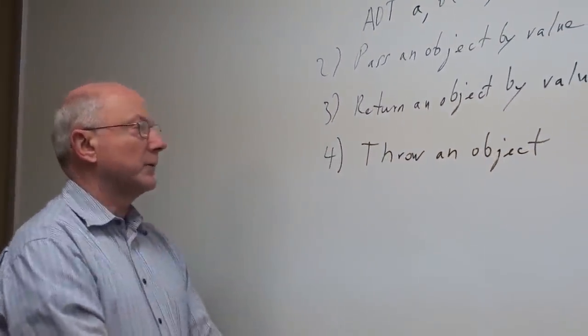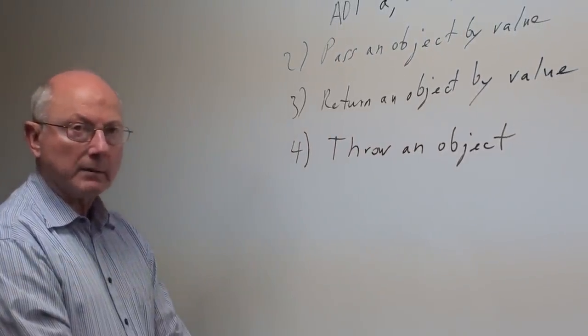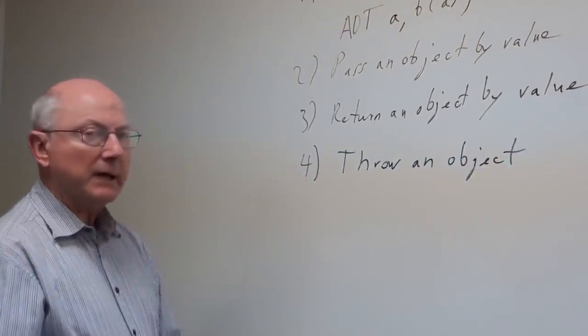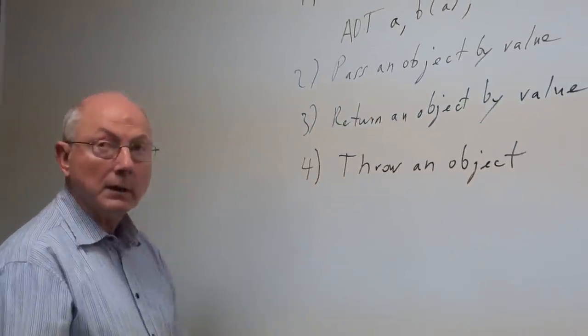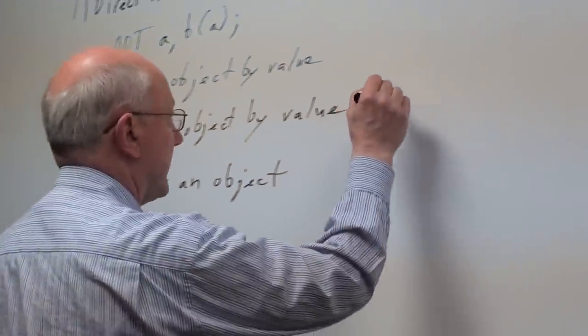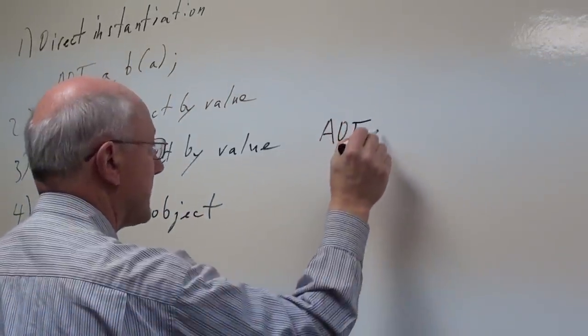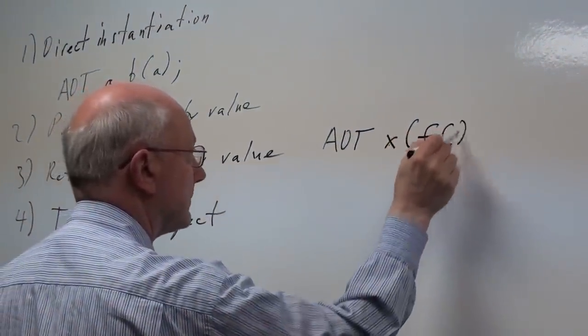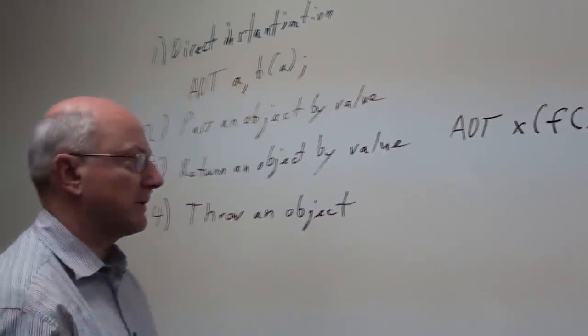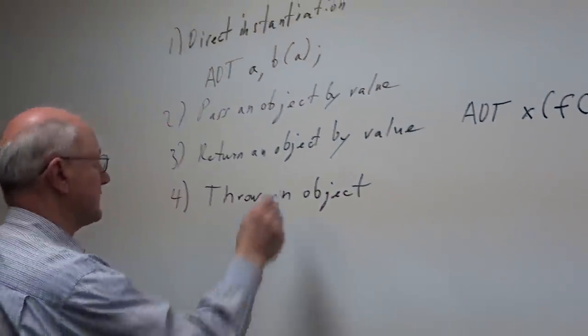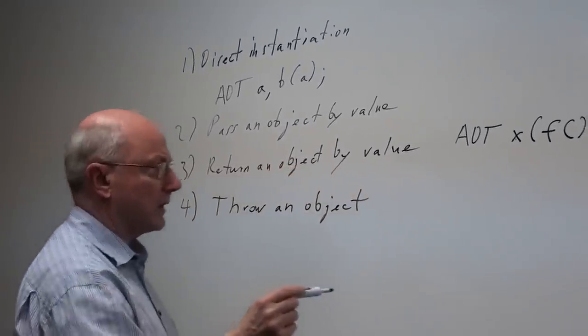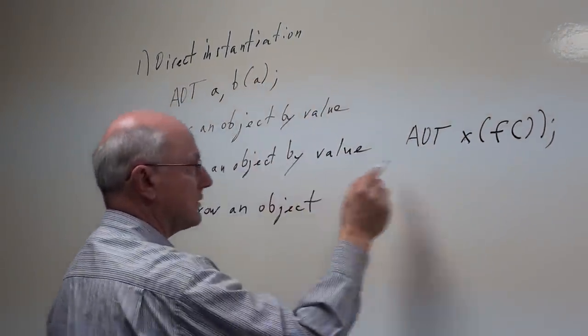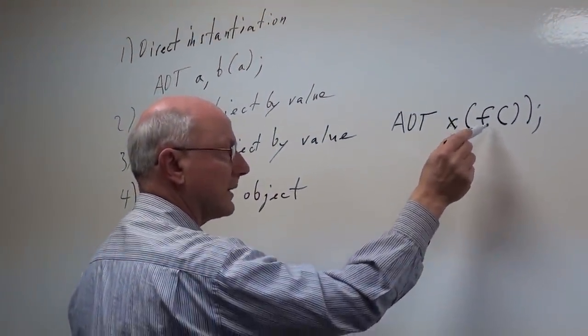the third one, returning an object by value, is problematic. What does that mean? It means it may get optimized away by the compiler. For example, if you had the statement ADT X equals some function, and this function returns an object by value, well, you can make the argument that since you're returning that value, the copy constructor gets called once. But how does X get created? It's really almost the same as the first situation. X gets created from the result of whatever the function returns.